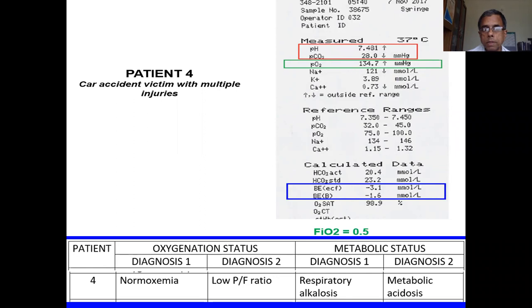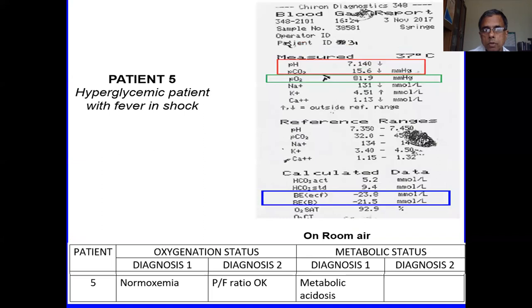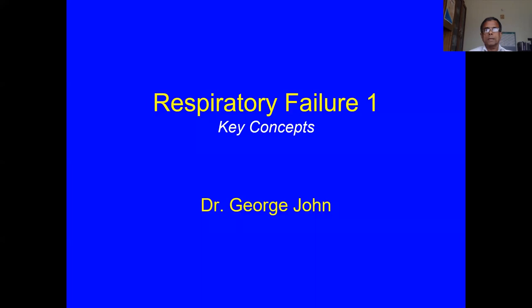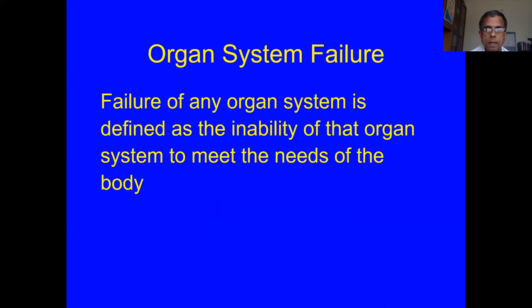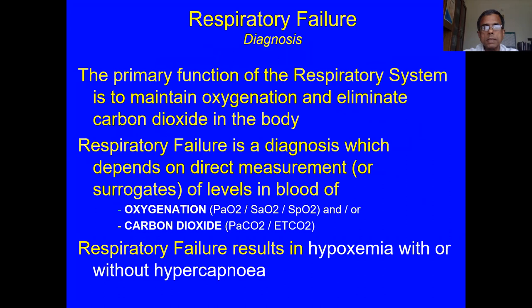So shall we proceed to the main body? This session covers respiratory failure — some key concepts. Part two tomorrow will deal with management of respiratory failure. Failure of any organ system is defined as the inability of that system to meet the needs of the body. Since the function of the respiratory system is to maintain oxygen and remove carbon dioxide, respiratory failure implies that either oxygenation is impaired or carbon dioxide excretion is impaired.